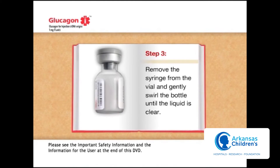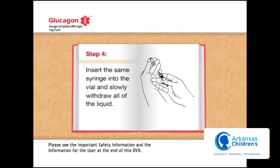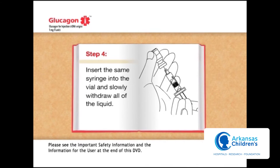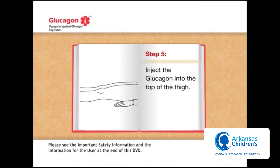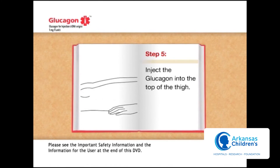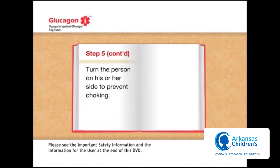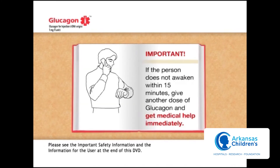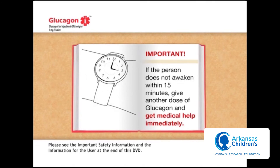The glucagon should not be used unless the liquid is clear and has a water-like consistency. Step 4: Holding the vial upside down, insert the same syringe and slowly withdraw all of the liquid. Step 5: You're ready to give the injection. The usual injection site is the top of the thigh. Insert the needle and inject the glucagon. For children weighing less than 44 pounds, use half the amount, or 0.5 milligrams. When done, turn the person on their side to prevent choking. The person must wake up within 15 minutes; if not, give another dose and get medical help immediately.